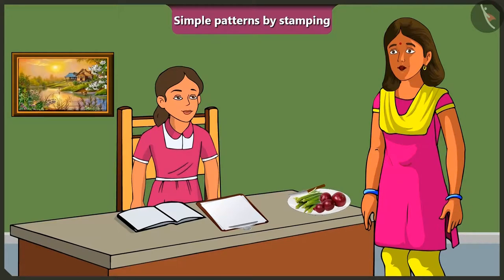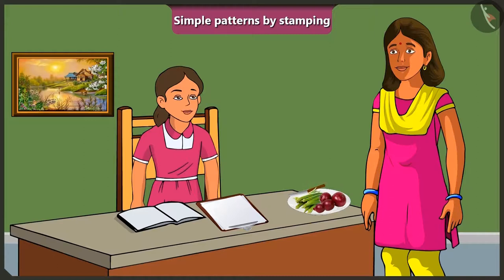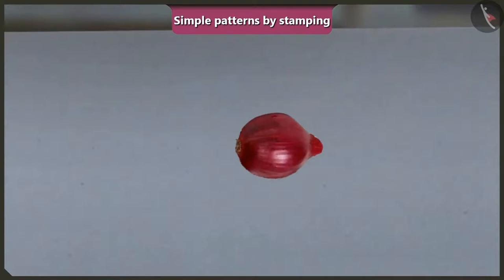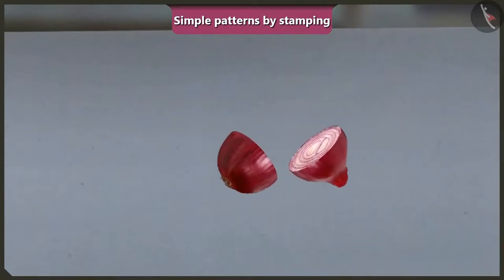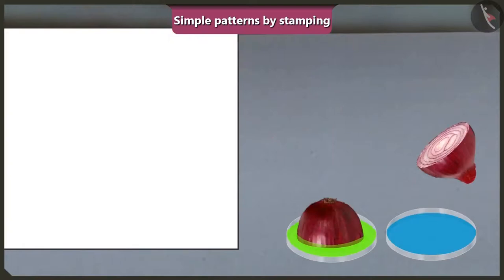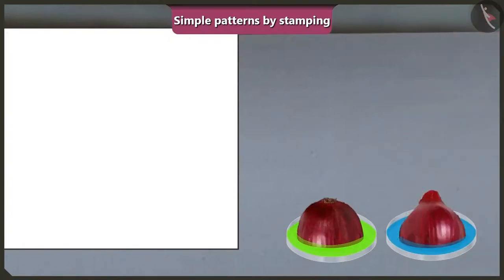Vinnie, look, which vegetables are these? These are lady's finger and onions. Oh yes, our teacher told us that we can make use of vegetables as stamps to make patterns. You are right. So now we will cut this small onion into two halves like this and dip both the pieces in different colors. We will then stamp these on a paper and create a nice pattern.